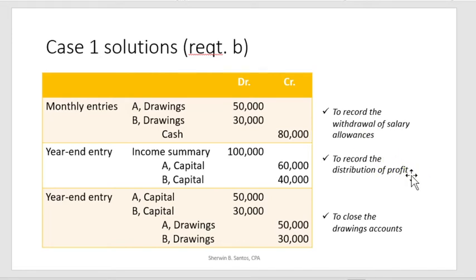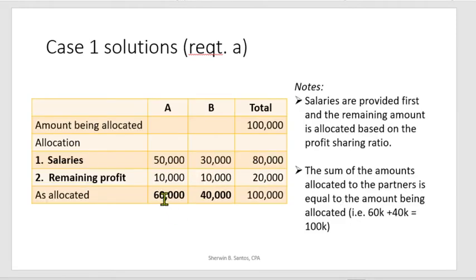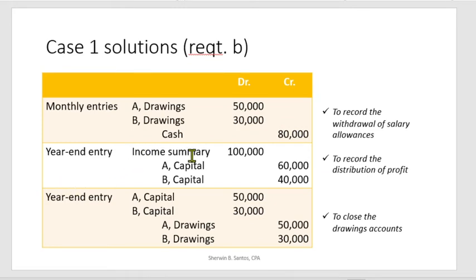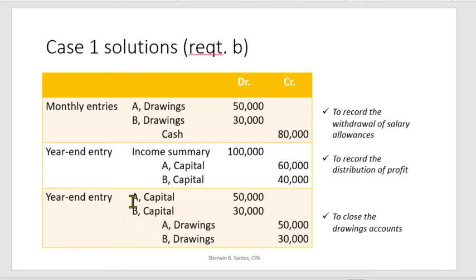Next, to record the distribution of the profit — the total amounts of $60,000 and $40,000 — this is a year-end entry. Debit Income Summary $100,000; credit A Capital $60,000 and credit B Capital $40,000, increasing the capital of A and B accordingly. Then, to close the drawings account — since drawings are temporary contra-accounts to capital — the year-end closing entry is: debit A Capital $50,000, debit B Capital $30,000, credit A Drawings $50,000, credit B Drawings $30,000, eliminating the drawings from their respective capital accounts.